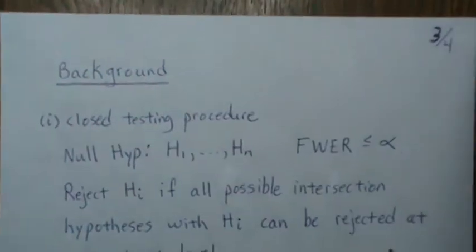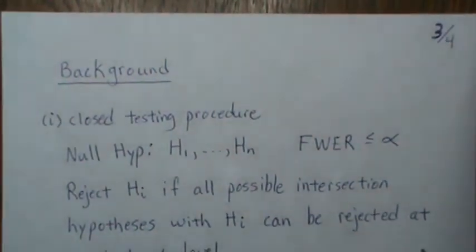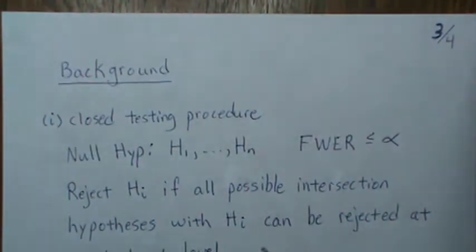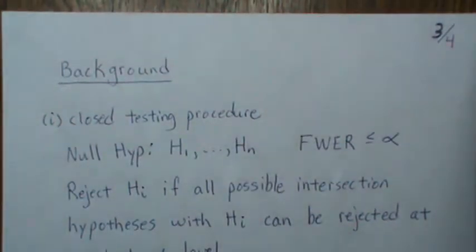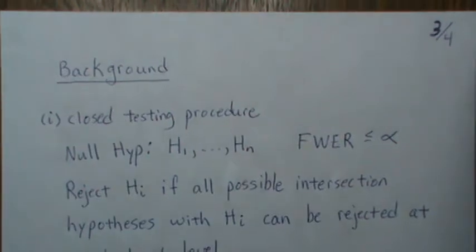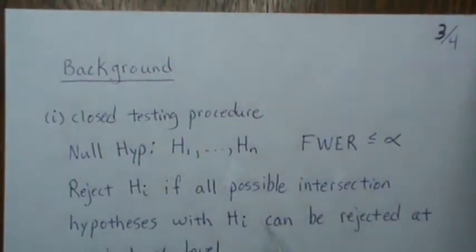Now for part two, which I think is pretty fascinating — that's why I'm going to cover it. There are two background concepts needed: what is a closed testing procedure, and what is the Bonferroni correction? I think we all know what the Bonferroni correction is, but I'll cover it anyway.